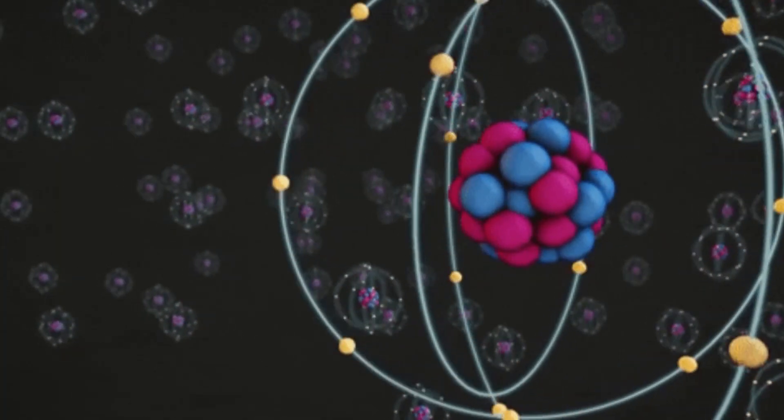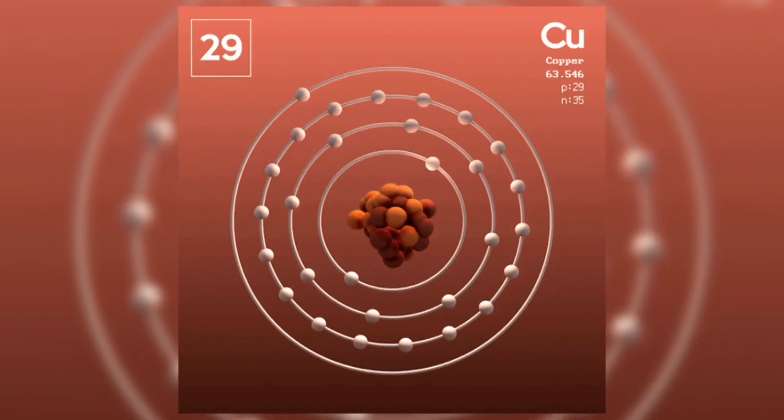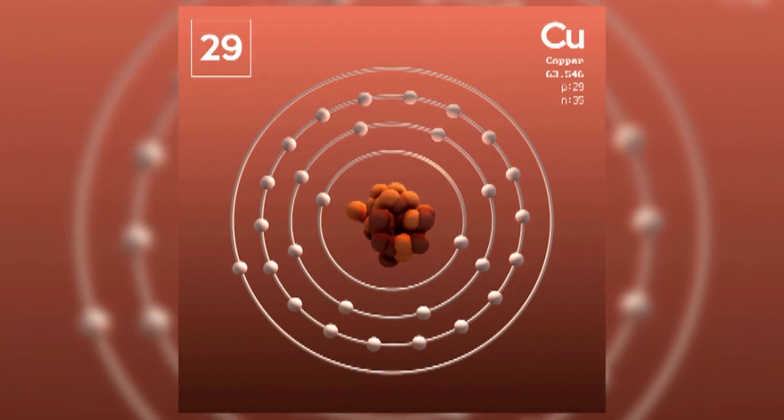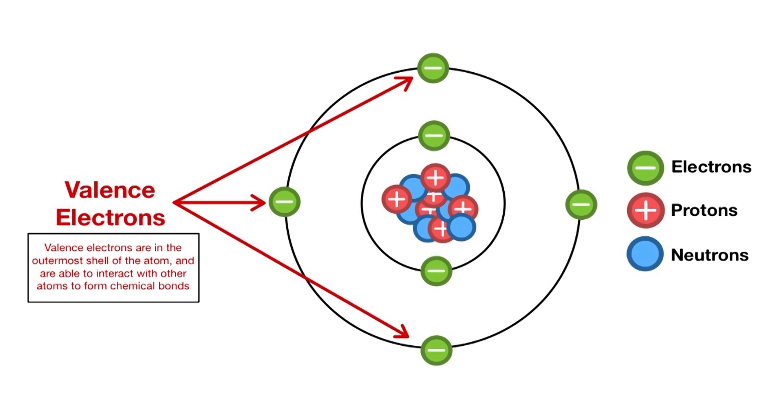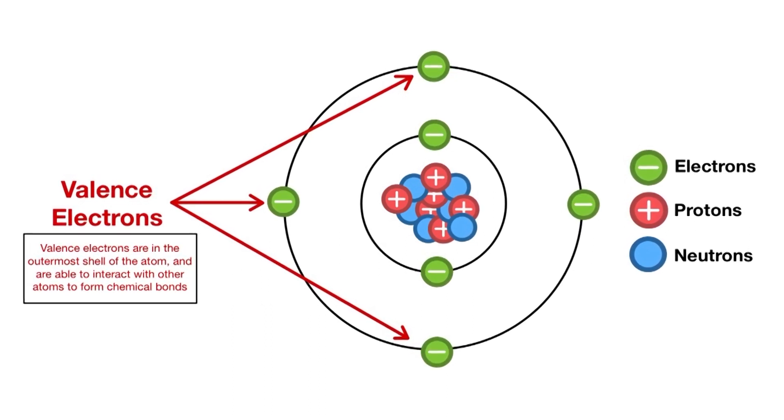Electrical conductivity is the result of movement of electrically charged particles. Silver, copper and gold have one electron in the outer valence shell of their atoms, which makes it easier for them to create current. For a current to form, a charged particle simply needs to nudge into another charged particle, and then that particle nudges into another, and so on.